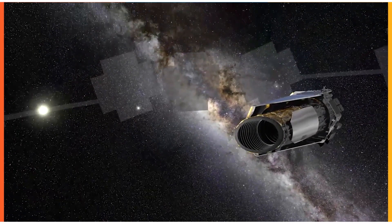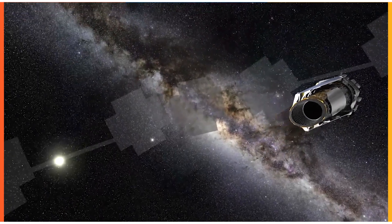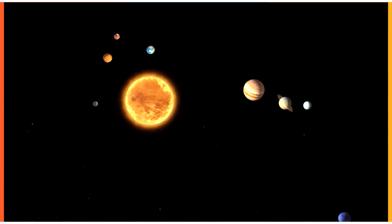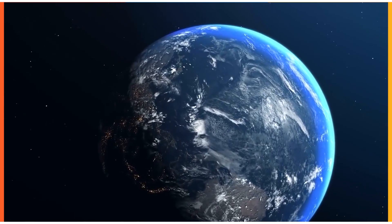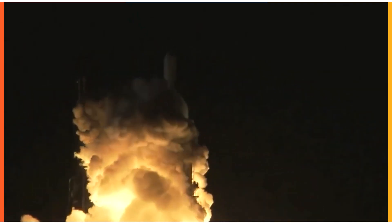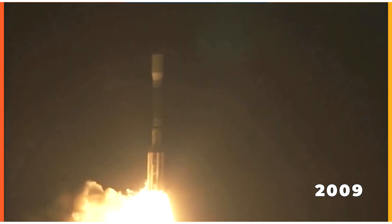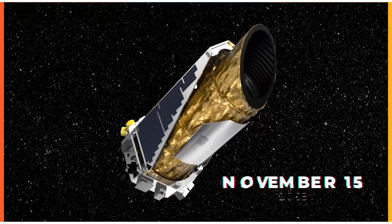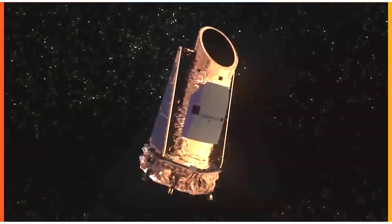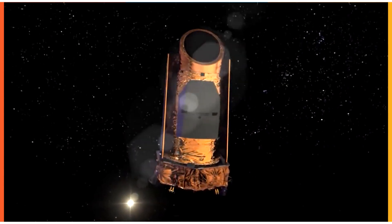NASA's Kepler Space Telescope was a space observatory intended to discover planets beyond our solar system, with a special emphasis on discovering planets that potentially resemble Earth. From its inception in March 2009 through its decommissioning on March 15, 2018, the telescope was in operation for just about nine years.